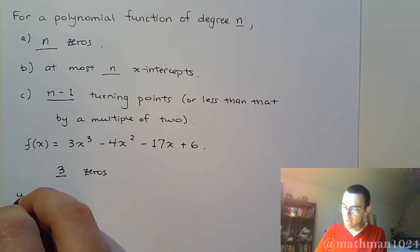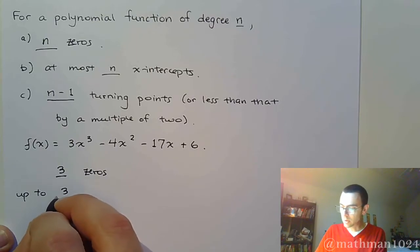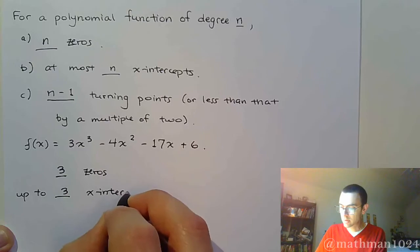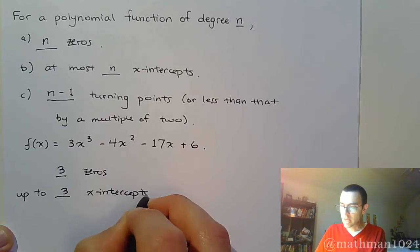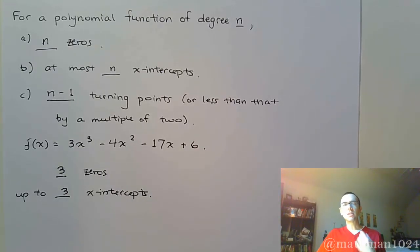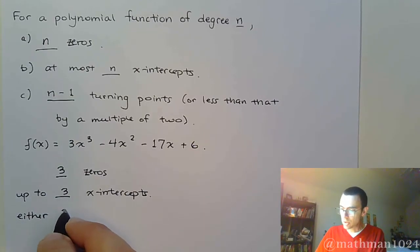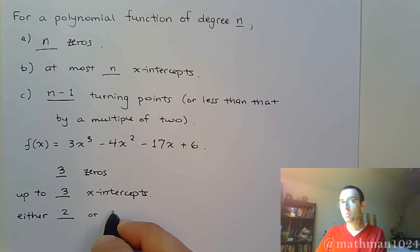That means we have up to three x-intercepts. And again, the number of intercepts depends entirely on how many real zeros we have. And then we're going to have this. We will have either two turning points, or less than that by a multiple of two. So, two minus two is going to be zero.